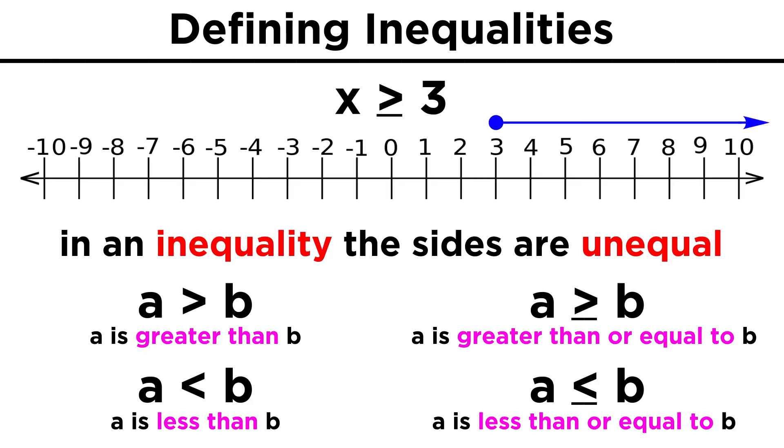So if X is greater than or equal to three, then X could be three, or any real number greater than three, including three point zero zero one, pi, seven halves, or a billion.